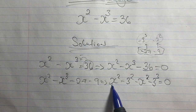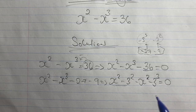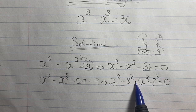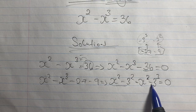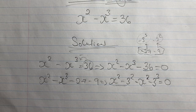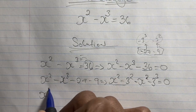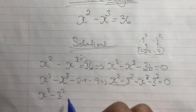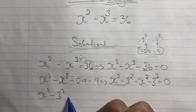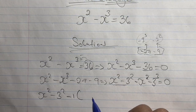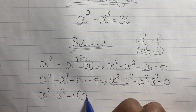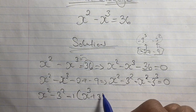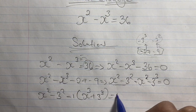Now let's recall our algebra rules — we have the difference of two squares and the difference of two cubes. However, from here we can factor negative 1 from negative x cubed minus 3 cubed. So we have x squared minus 3 squared, and factoring out negative 1, we get negative 1 times (x cubed plus 3 cubed), all equal to 0.